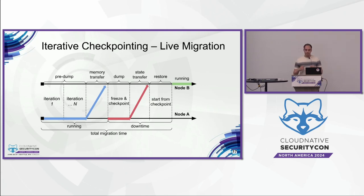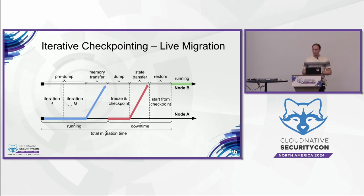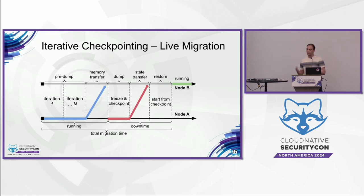With live migration, performance is very important because this iteration process depends on how quickly the application modifies memory pages. For example, if memory pages are modified faster than they can be transferred to the destination site, then this iteration process becomes infinite.